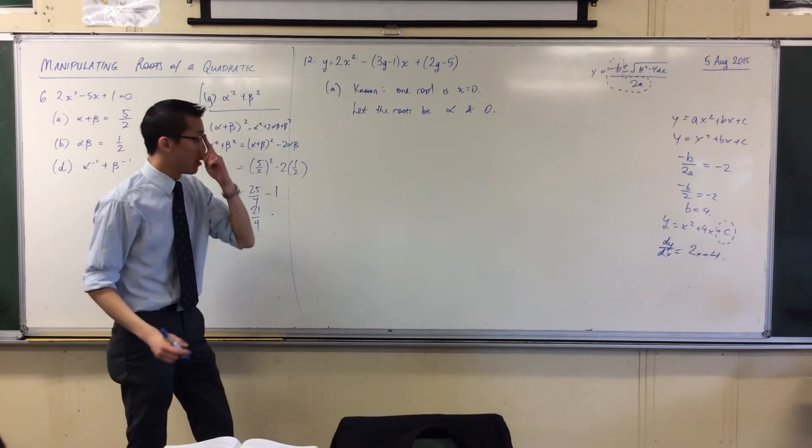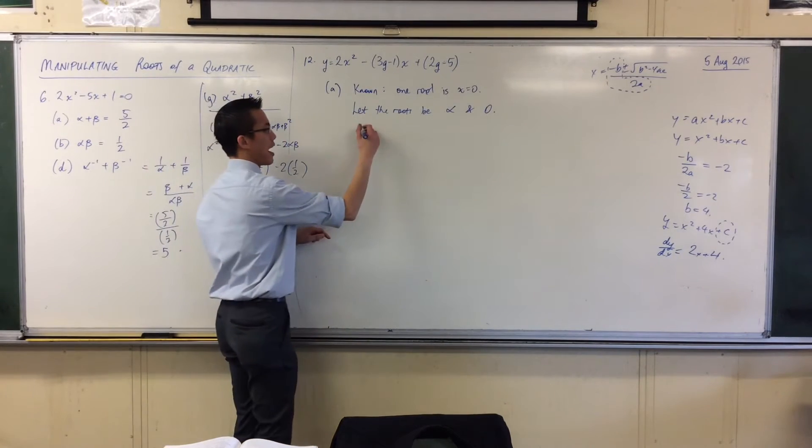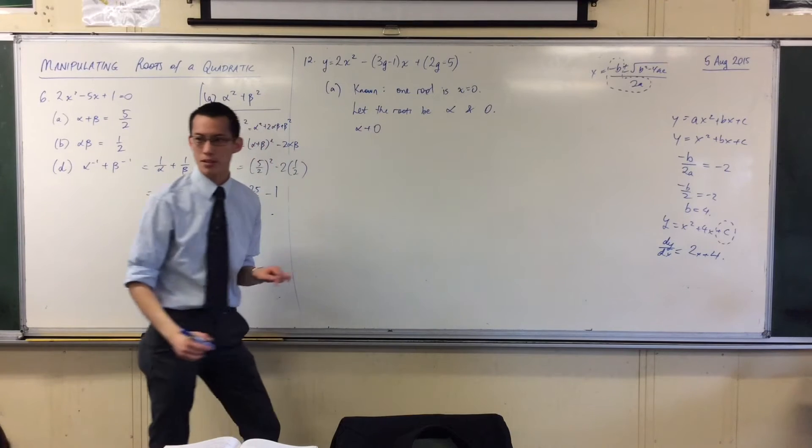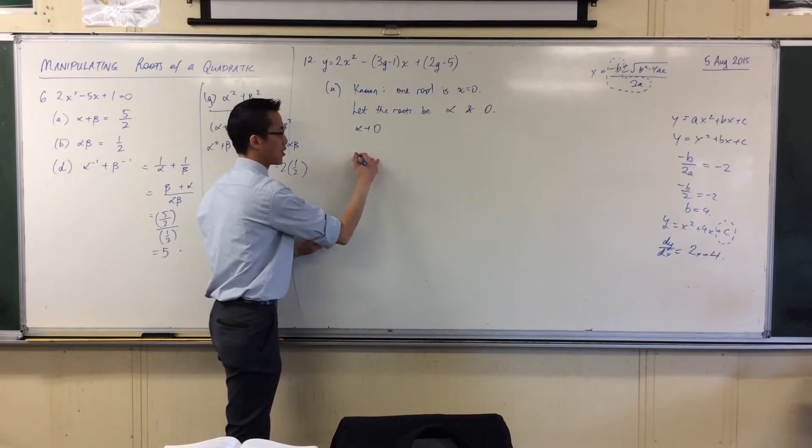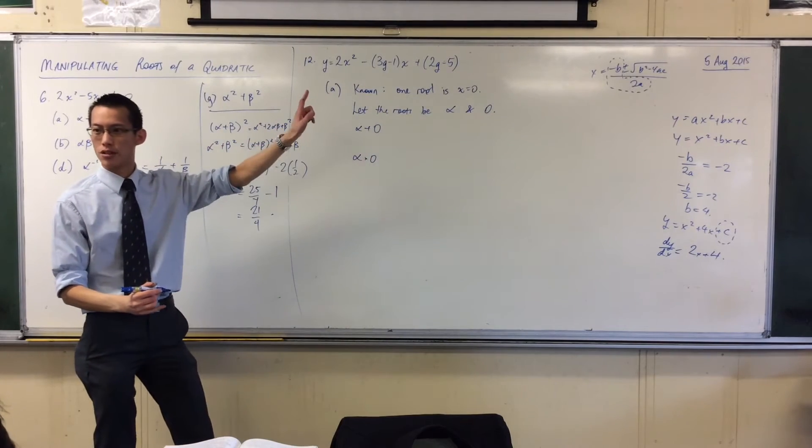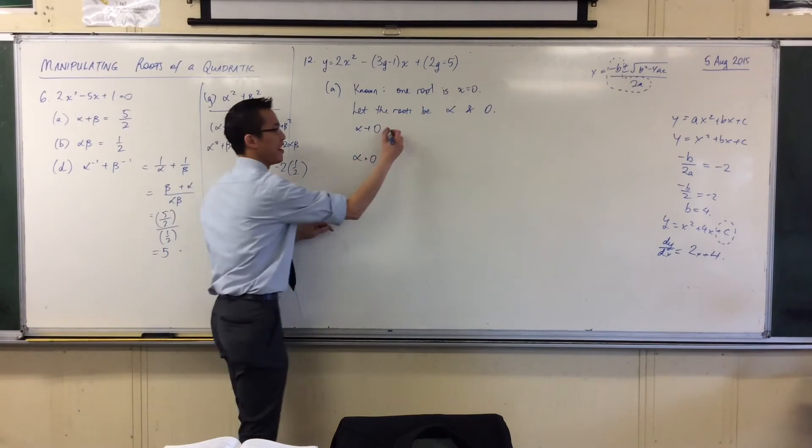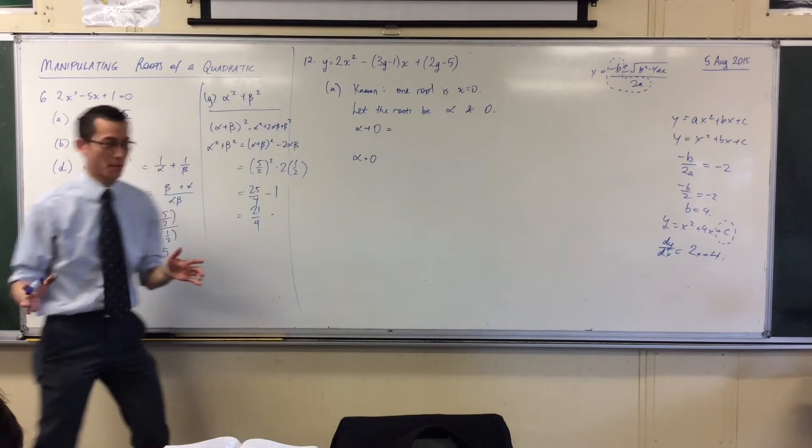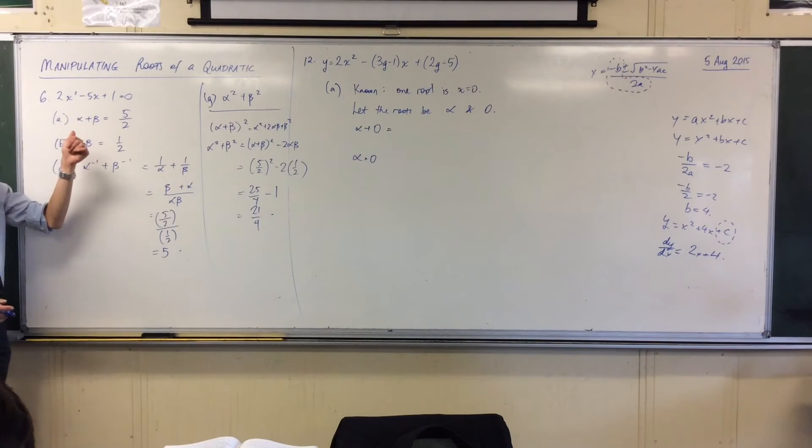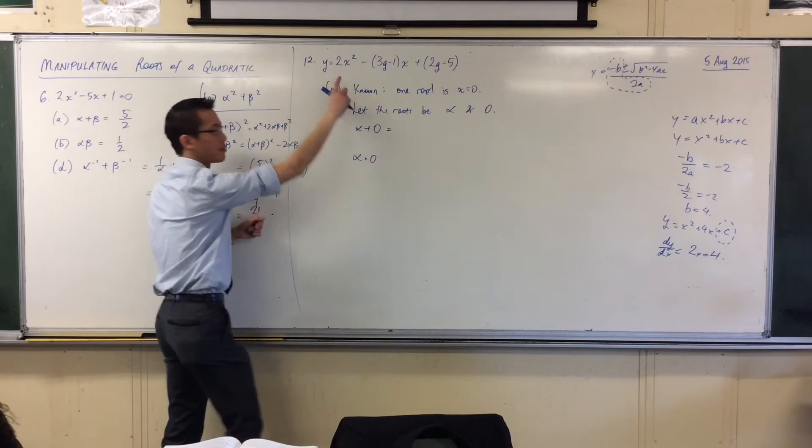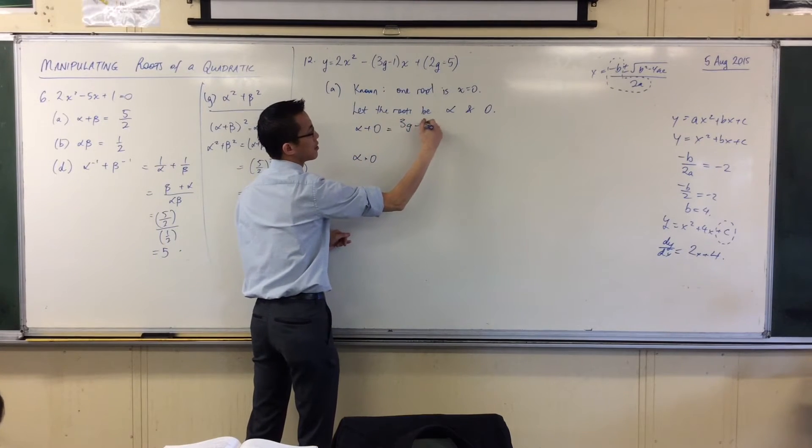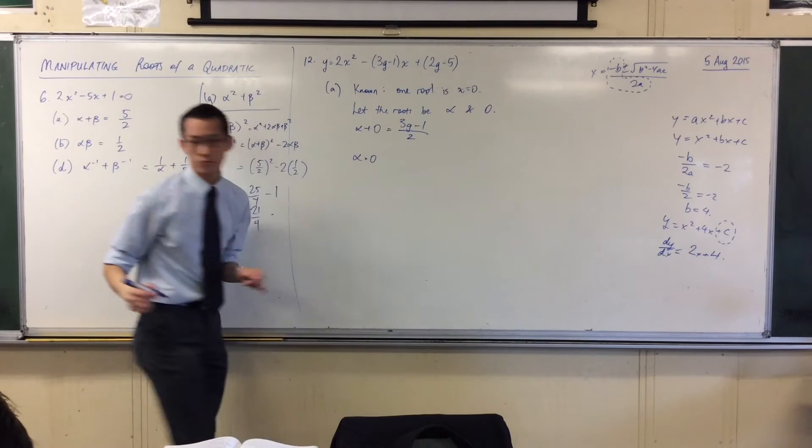So now I can say, I should know what the sum of roots is based on the coefficients, and I should know what the product of roots is based on the coefficients. So the sum of roots is just minus b on a, negatives cancel, there you go, you happy with that?